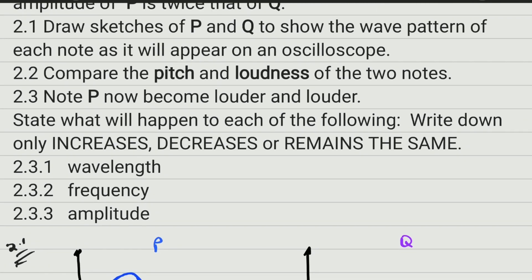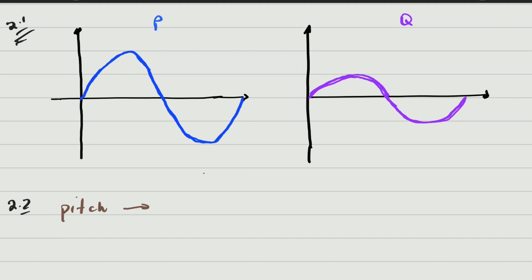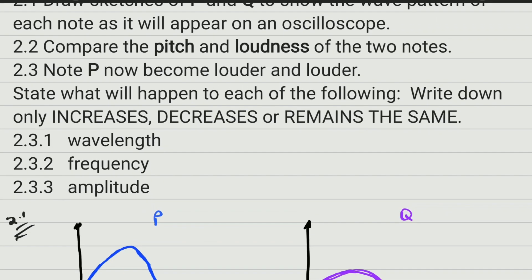Question 2.2: compare the pitch and loudness of the two nodes. Pitch is related to frequency. Since P and Q have the same frequency, they have the same pitch. For loudness: loudness is related to amplitude. Since P has double the amplitude of Q, P will be twice as loud as Q.